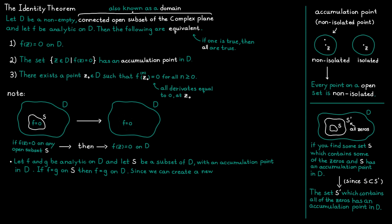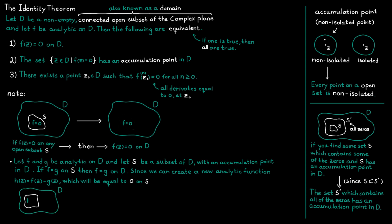This follows because we can create a new analytic function H defined as F minus G. H equals zero on the subset S since f and G agree there. Since S has an accumulation point in D, the second statement of the identity theorem is fulfilled, so H equals zero on the whole domain D. But since H equals F minus G, this means F equals G on all of D. This result is called the identity theorem for analytic functions and sometimes appears as its own theorem in textbooks, though it follows directly from the identity theorem.